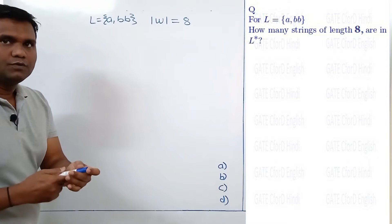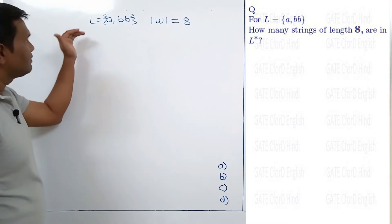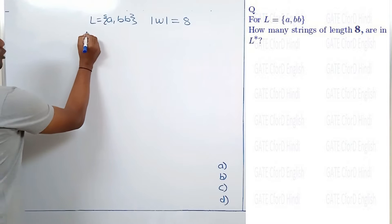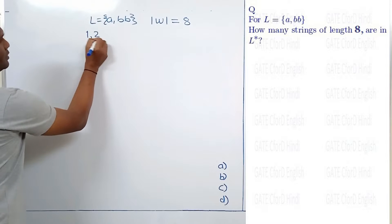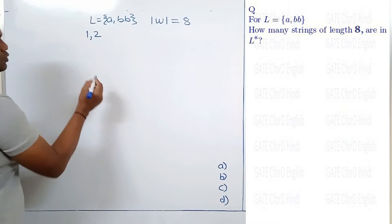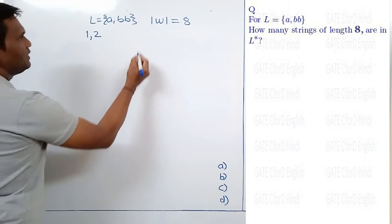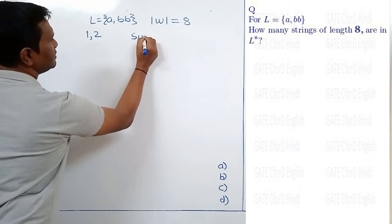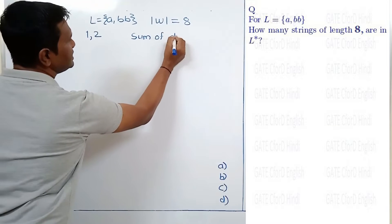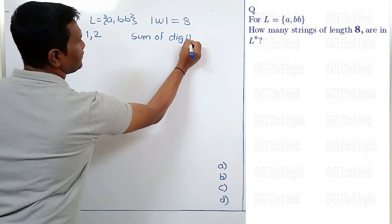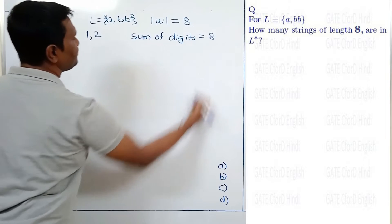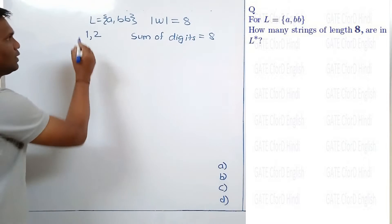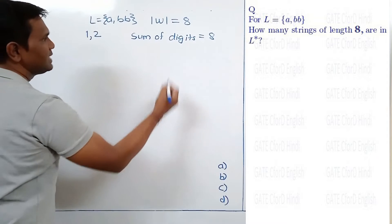For explanation purposes we will consider a simpler version of this problem. We will see how many strings can be formed using digits 1 and 2 such that the sum of digits is 8. In other words, how many numbers can be formed using digits 1 and 2 such that the sum of digits is 8?